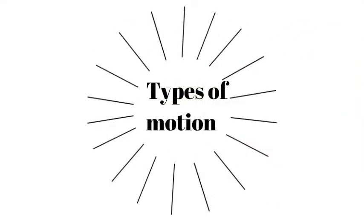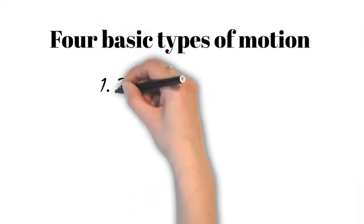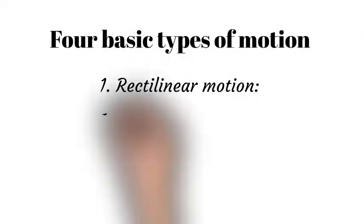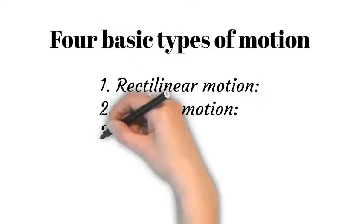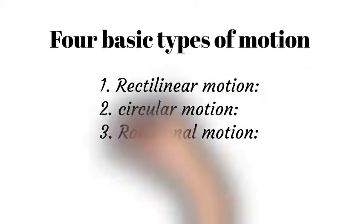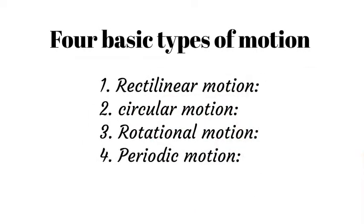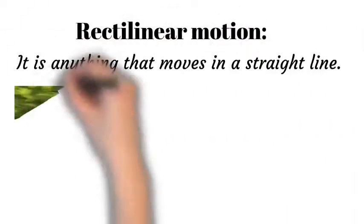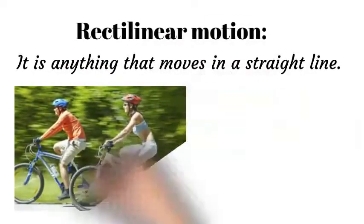The four basic types of motion are: rectilinear motion, circular motion, rotational motion, and periodic motion. Rectilinear motion is anything that moves in a straight line, for example.